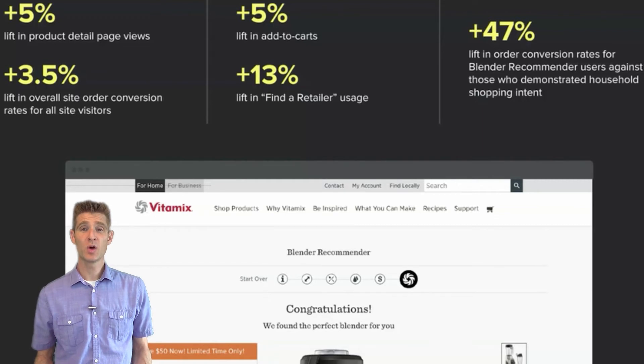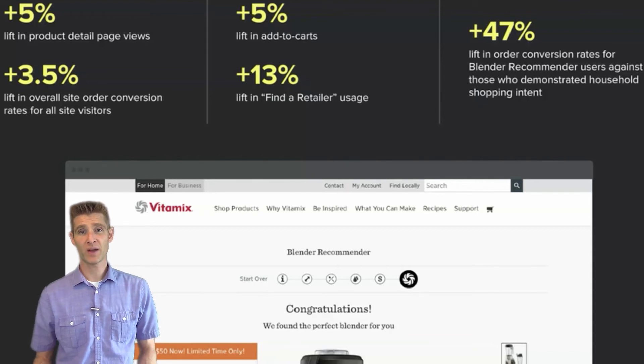There was a 13% increase in people who tried to find a retail location. There was a 5% increase in add to carts. There was an increase in product detail page views by 5%, and there was an overall site increase in conversions by 3.5%. So this self-selection strategy works.